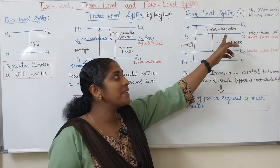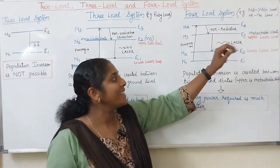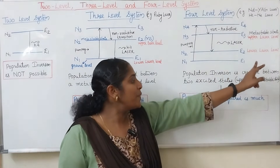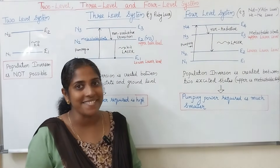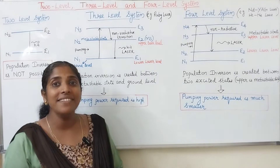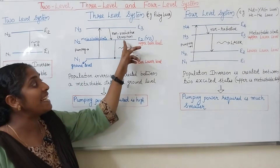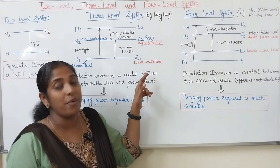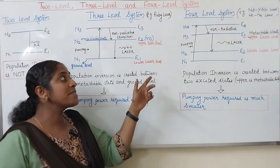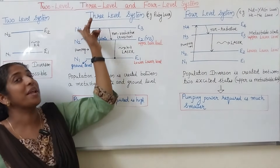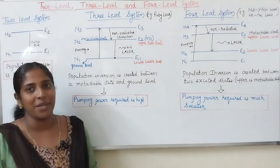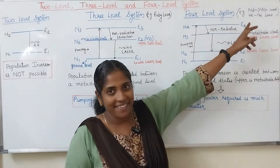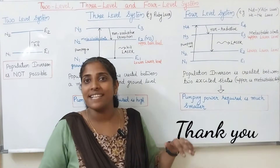In the 4 level system, the upper laser level is the metastable state and the lower laser level is also an excited state, so the pumping power required is much smaller. In the 3 level system, population inversion is created between an excited level and the ground level, requiring more than 50% of ground level atoms to be raised, so the pumping power required is high. Therefore, practical lasers are usually 4 level systems — for example, Neodymium YAG laser and Helium-Neon lasers.